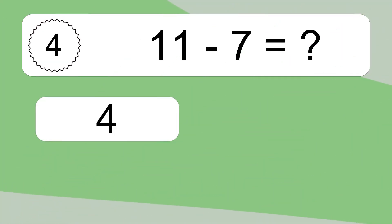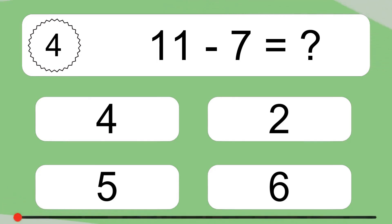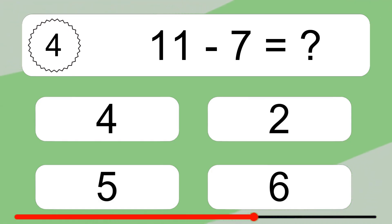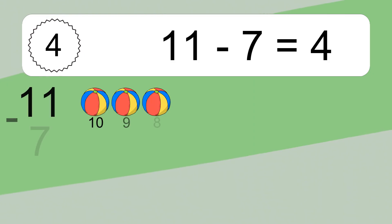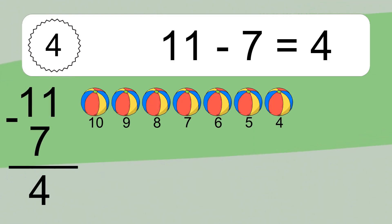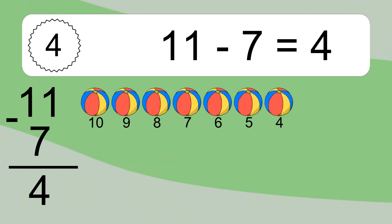11 minus 7 equals what? 11 minus 7 equals 4. Let's count it. 10, 9, 8, 7, 6, 5, 4.